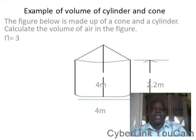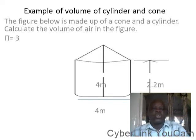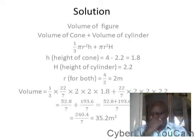Now let's look at the solution in the next slide. Volume of figure equals volume of cone plus volume of cylinder. Of course, the volume of cone is 1/3 π r²h, that is small letter h which is the height of the cone, plus π r²H, capital H is the height of the cylinder. See the evolution there.